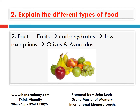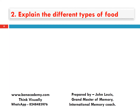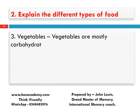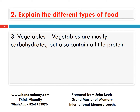Until you get this sentence correctly, try to repeat 2-3 times to make sure you learned it thoroughly. Next, vegetables. Vegetables are mostly carbohydrates but also contain a little protein. Along with carbohydrates, protein is also present in small quantity in vegetables.